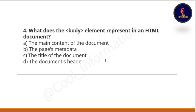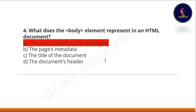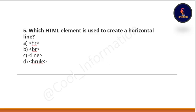Next question: what does the body element represent in an HTML document? Option A: the main content of the document. Option B: the page metadata. Option C: the title of the document. Option D: the document's header. The correct option is A — the main content of the document.